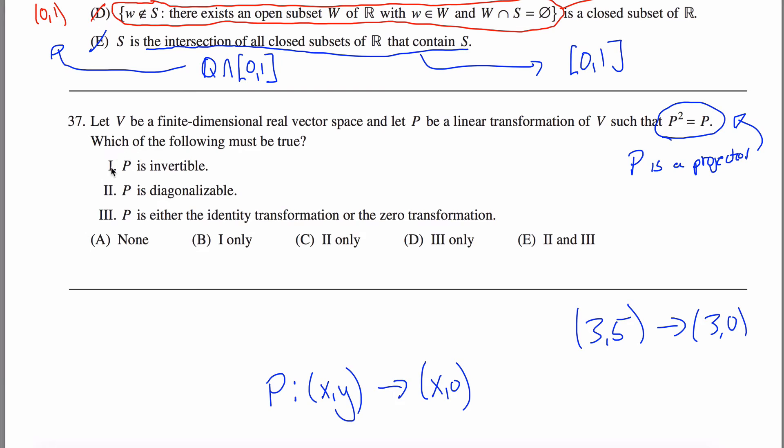Anyways, P is invertible. No, that is false. This thing right here is not invertible, right? How would you undo this thing? Where would you send (3,0) to? You're like (3,5). Yeah, but (3,4)...